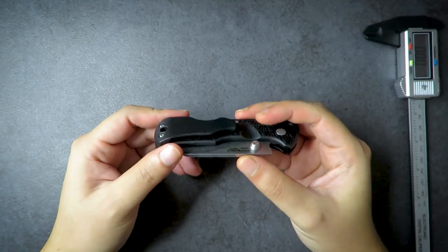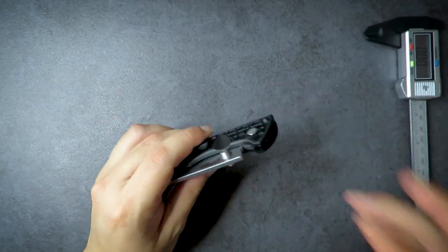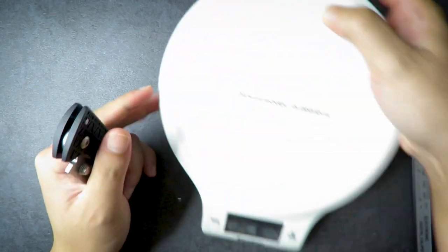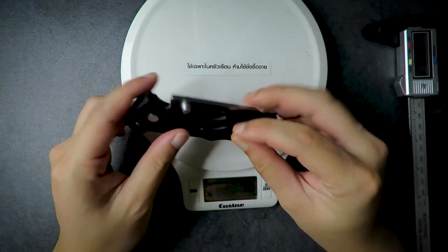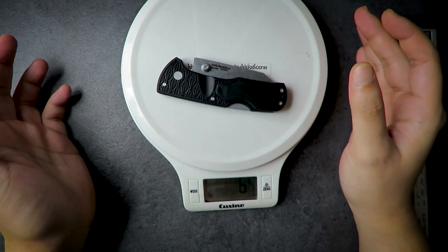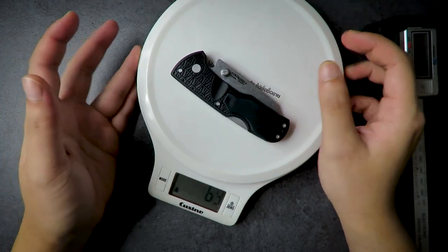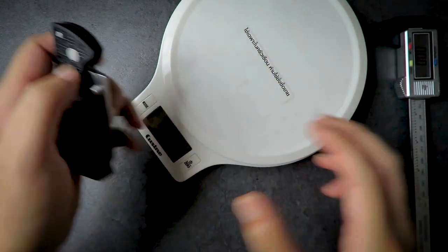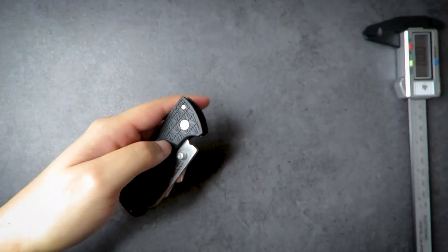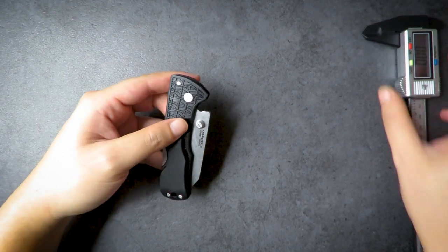And also one thing you might have noticed is that the pocket clip is plastic which we will get to in a little bit. Let's get our scale on right here. Comes in at about 67-68 grams, about 67 grams, which comes down to about 2.4 ounces. So very small, very light knife, I really like it.